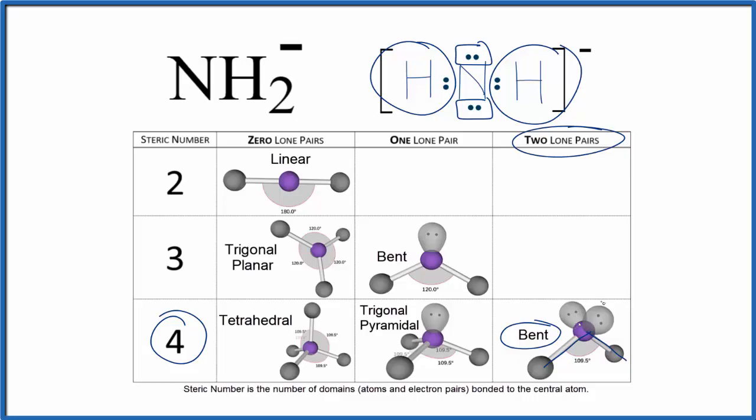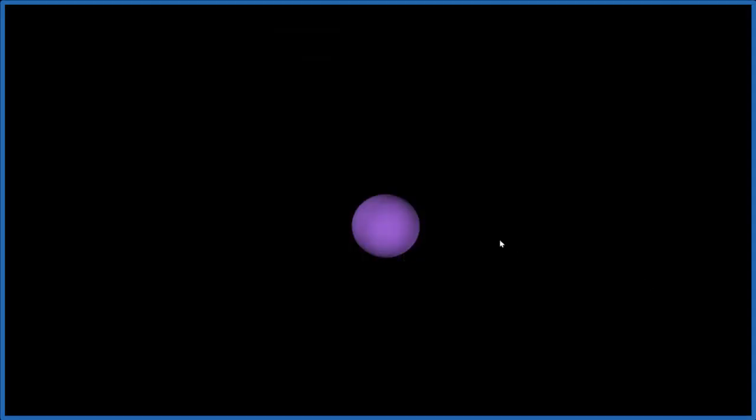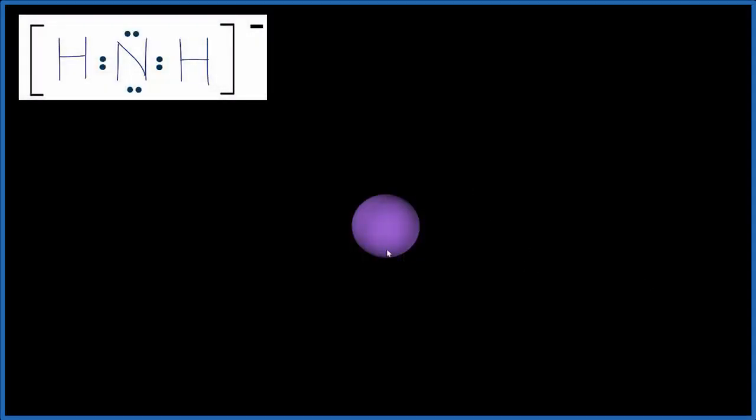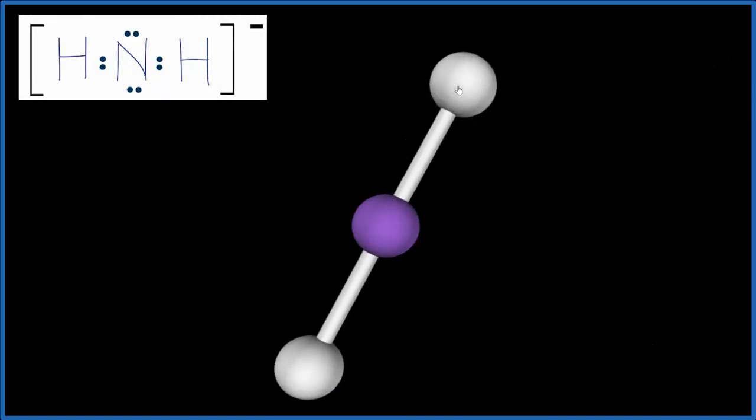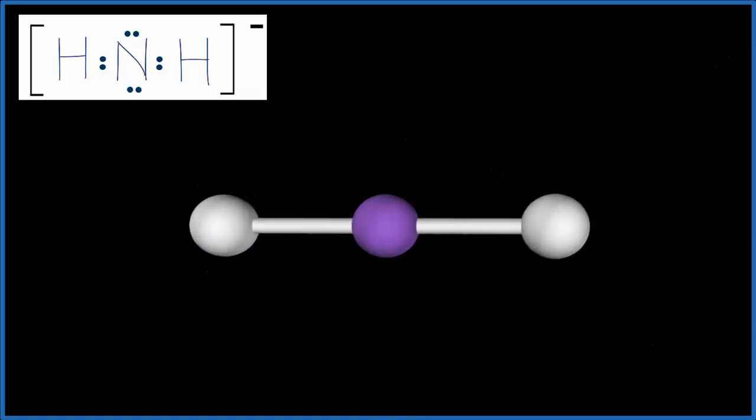Let's see what that looks like in 3D. The purple will be the central nitrogen atom. We'll add two hydrogen atoms, one, two. You can see they spread out as far as they can from each other, but we've got those two lone pairs. So we add one,